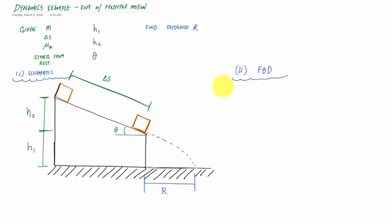Here I'm going to draw my free body diagram of this particle — from where it's released from rest to somewhere in between where it leaves the ramp. Here is the particle, and this angle is theta. I like to draw the external force side and the inertial side.